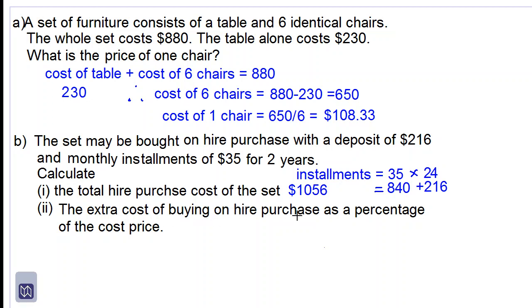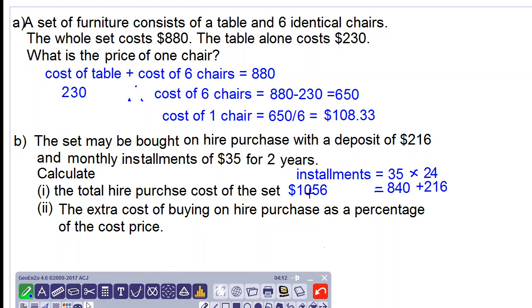Part two, the extra cost of buying on hire purchase as a percentage of the cost price. So let's find the extra cost of buying on hire purchase. Initially the cost was $880, but now it has gone up to $1056.